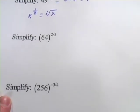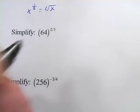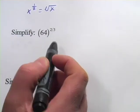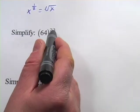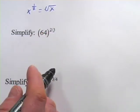Let's look at the next one. We have 64 to the 2/3 power, a little trickier. When you have a numerator and a denominator here, remember the denominator is your root. The numerator is the exponent.